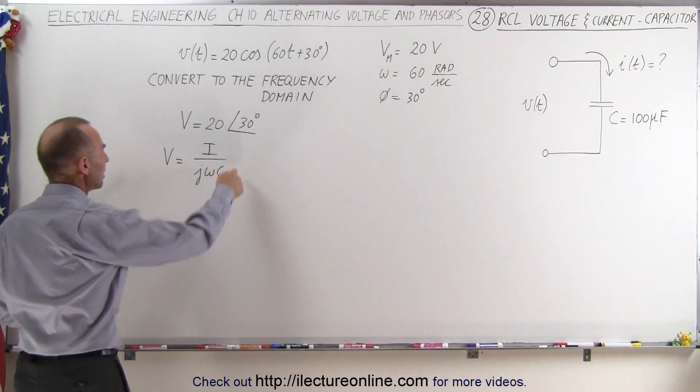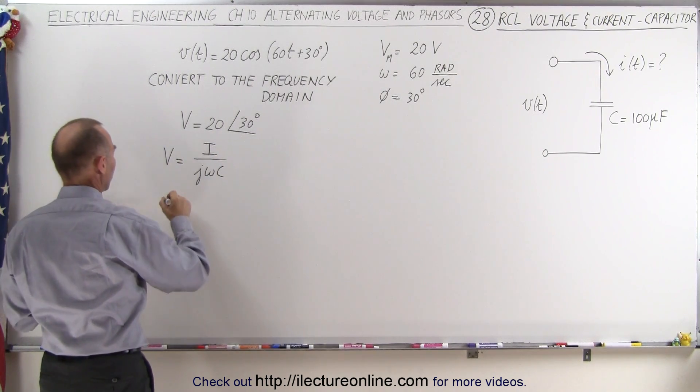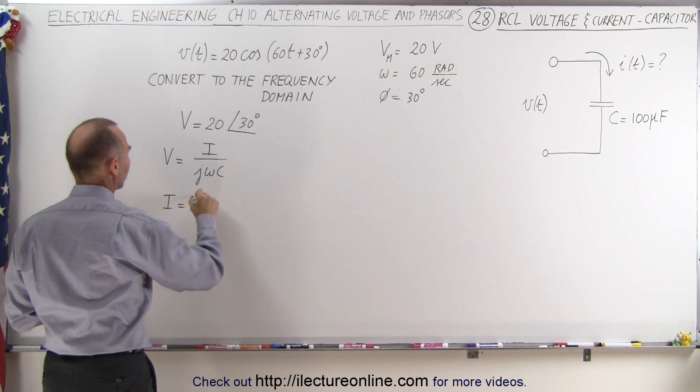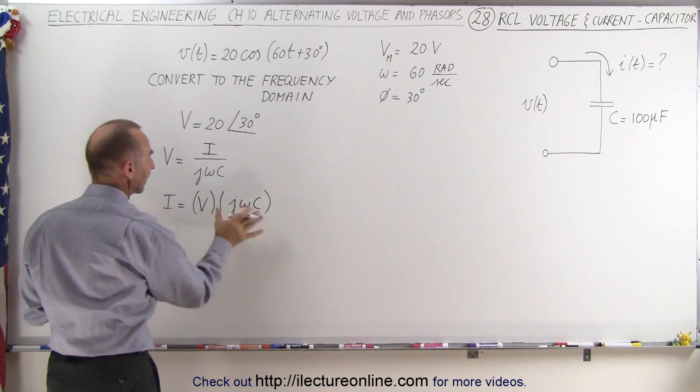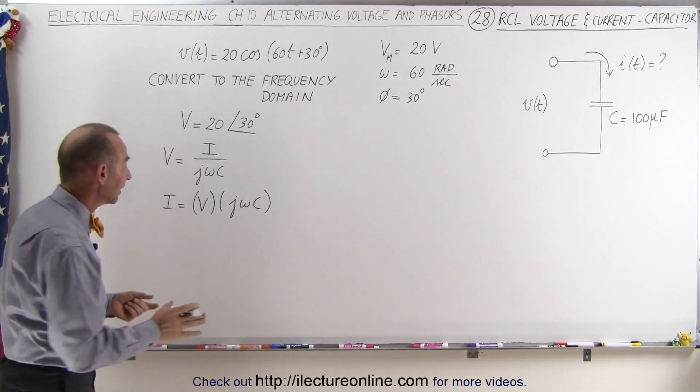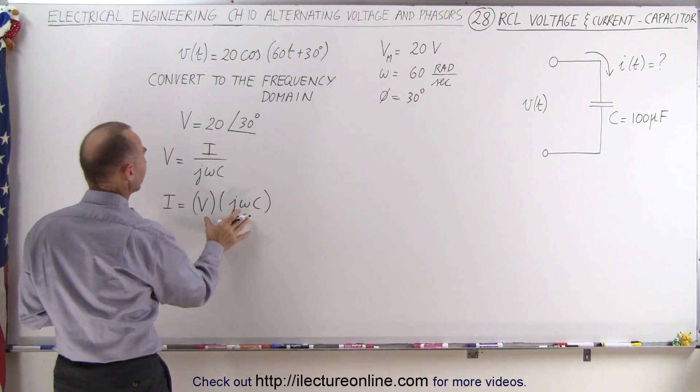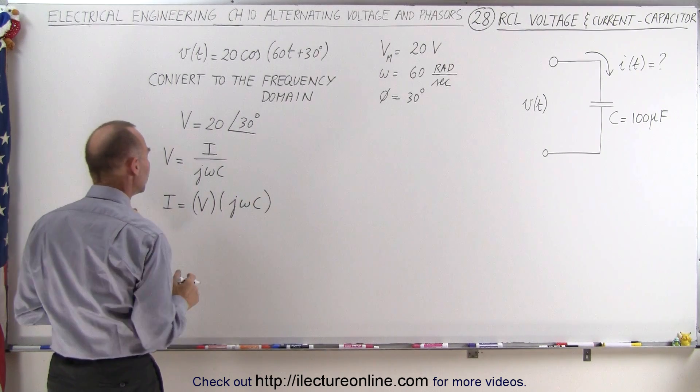So now from here we solve that for the current. So I have I equals the voltage multiplied times jωc. If you write it like this, then you can see that when you convert that into the phasor domain or the frequency domain it makes it easier to do the calculation.